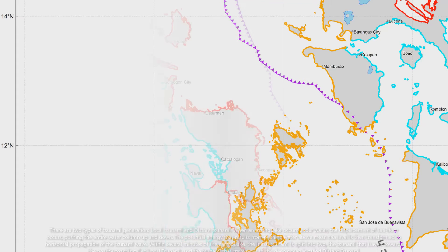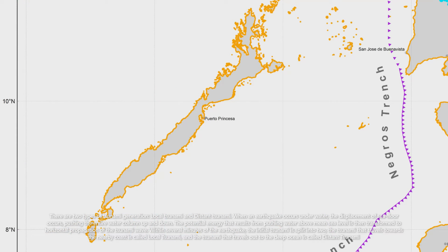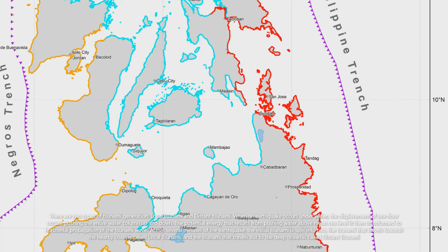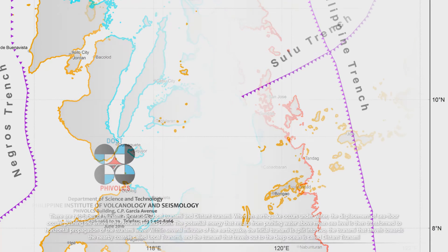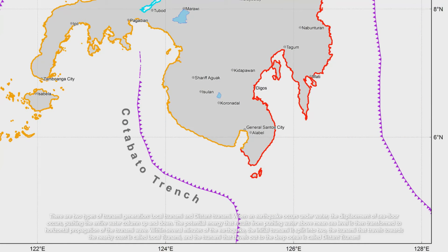There are two types of tsunami generation: local tsunami and distant tsunami. When an earthquake occurs underwater, the displacement of the seafloor occurs, pushing the entire water column up and down. The potential energy that results from pushing water above mean sea level is then transformed into horizontal propagation of the tsunami wave. Within several minutes of the earthquake, the initial tsunami is split into two: the tsunami that travels toward the nearby coast is called local tsunami, and the tsunami that travels out to the deep ocean is called distant tsunami.